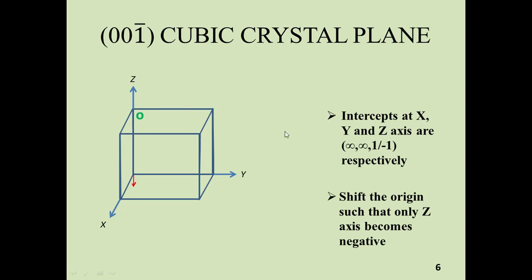The four negative z-axis directions are: this one, this one, this one, and this one. When you join these four corners, you will get the (001̄) cubic crystal plane.